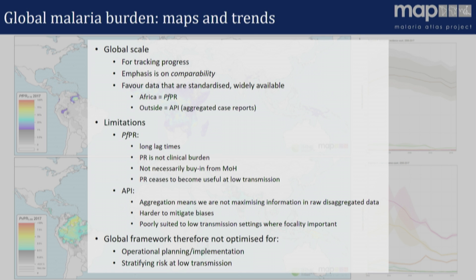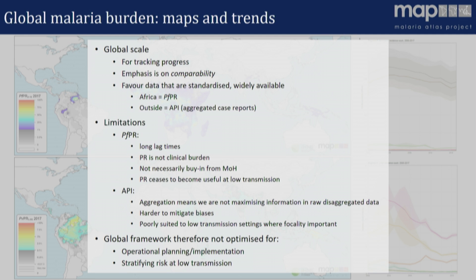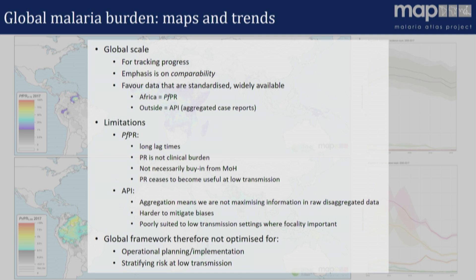API is also poorly suited to low transmission settings where you might be interested in very specific focal points of high transmission within an administrative unit — that gets washed out in the aggregate. So for all these reasons, the data we rely on for global-scale work, which has key advantages in that context, is really not necessarily optimal if what you're trying to do is support operational planning and implementation at the level of countries — the kind of information that programs might need on a regular basis to inform their decision making, particularly in low transmission settings. While the global maps and global burden estimation will continue, we are also developing in parallel a program of research focusing very much at the country level.